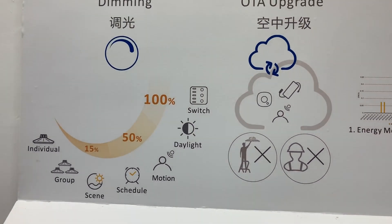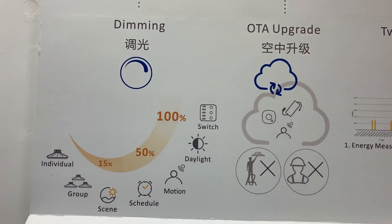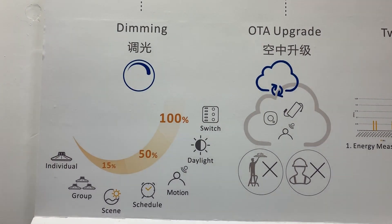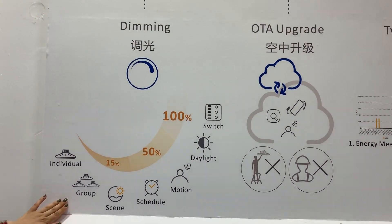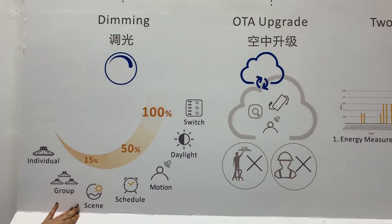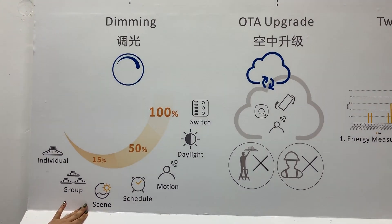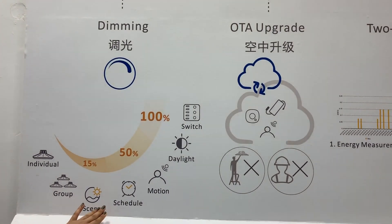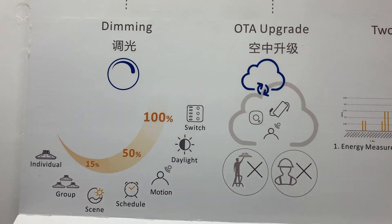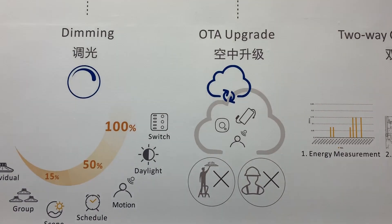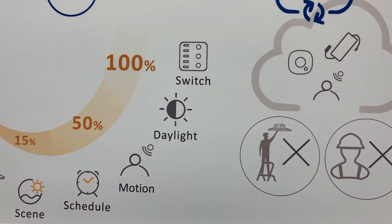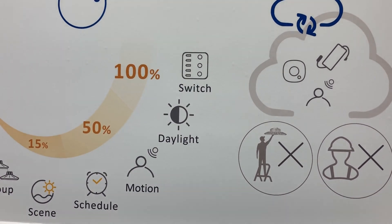These are the main features of the high bay control system. First, dimming — we can do individual or group dimming, or set different scenarios to dim the fixture to the right brightness. We can also set different schedules for better control. As you can see, we support motion sensor control and daylight sensor control for more automatic dimming.